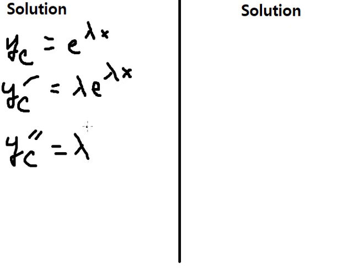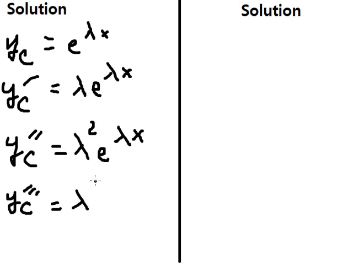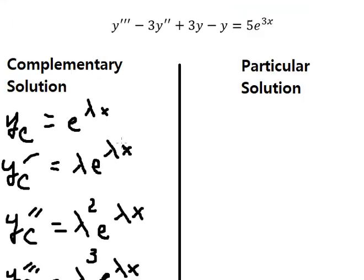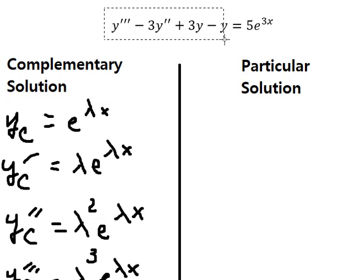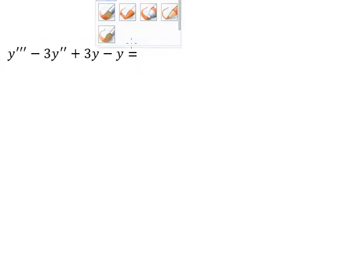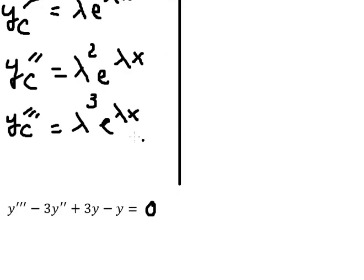We go to the second derivative of yc and we have λ² e to the power of λx. Then the third derivative of yc gives us λ³ e to the power of λx. Because this is the complementary solution, we set this equal to zero.